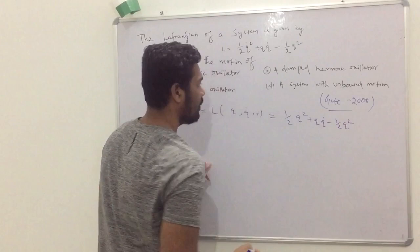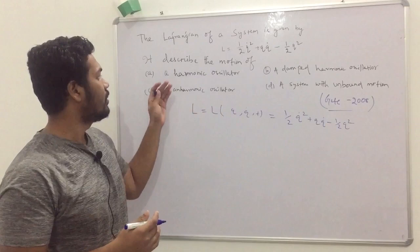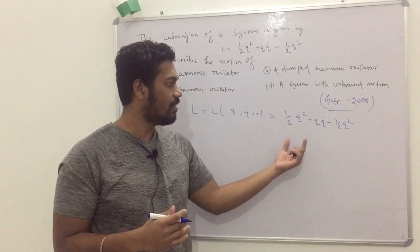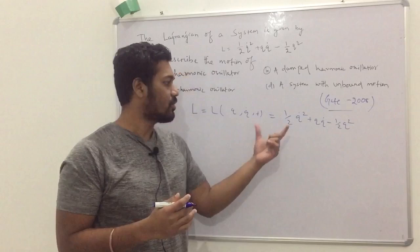So to find the Lagrangian equation of motion and determine which option is correct, we have to find the equation of motion for this system.